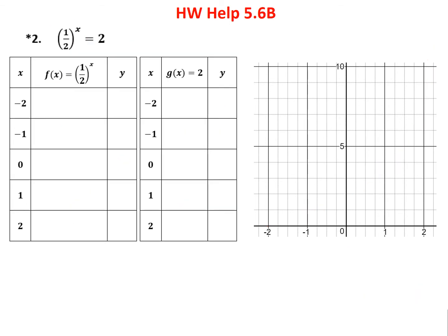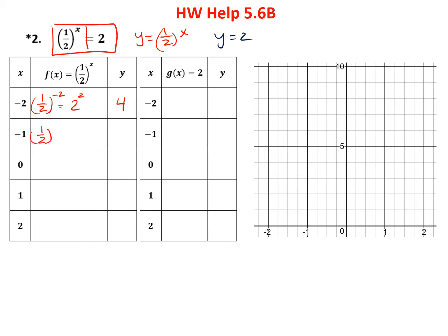For number 2, we split the equation into y equals (1/2) to the x and y equals 2. We'll make two tables, graph them, and see where they intersect. For the table: (1/2) to the minus 2 — a negative exponent means we divide, and dividing by a fraction is multiplying by the reciprocal, so 2 squared equals 4. (1/2) to the minus 1 is 2 to the 1, or 2. (1/2) to the 0 is 1. (1/2) to the 1 is 1/2. (1/2) squared is 1/4.